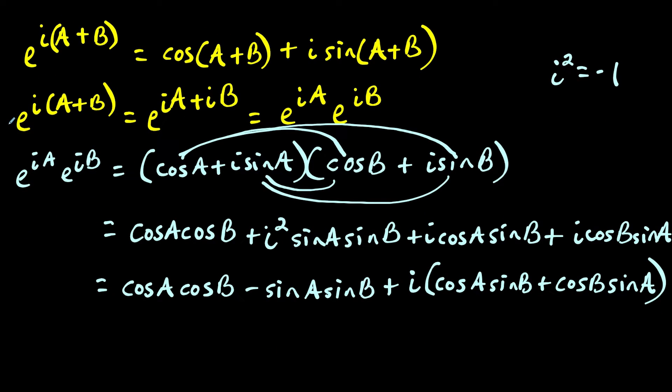So now we'll just combine everything. We said e to the i a plus b is equal to e to the i a times e to the i b. But I'm going to write the expanded form of this. Notice what we have is e to the i a plus b, we expanded with the formula, that was cosine of a plus b plus i sine of a plus b. That this is equal to e to the i a times e to the i b, which is this expression here.